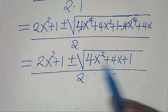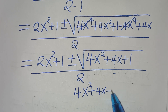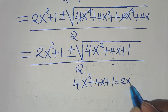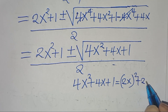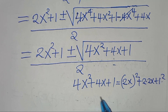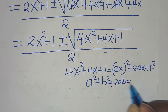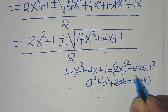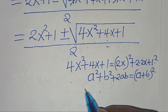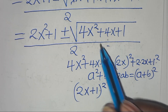We can express 4x squared plus 4x plus 1 as (2x plus 1) squared, since it fits the form a squared plus 2ab plus b squared, which equals (a plus b) squared. So applying this identity, the expression under the square root becomes (2x plus 1) squared.